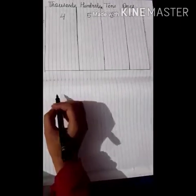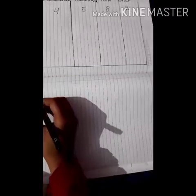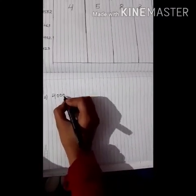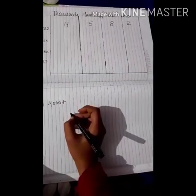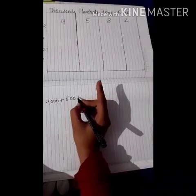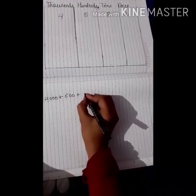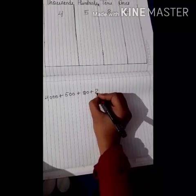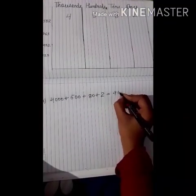Children, if we are going to write this in the expanded form, we will write like this. 4 is on the 1000's place, so in 1000's how many zeros we have? We have 3 zeros — 1, 2, 3. Plus 5 is on the 100's place, so in 100's how many zeros? 2 zeros — 1, 2. 8 is on the 10's place, so in 10's how many zeros? Only 1 zero. And in 1's, no zeros. So we write 2 as it is. So we have 4582.